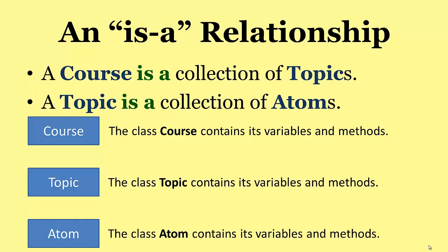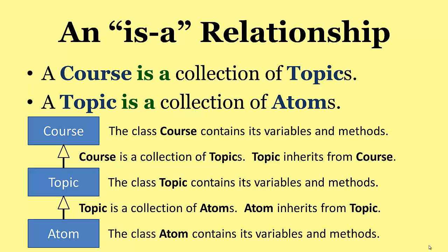Now comes the clever bit. What we're going to do is we're going to add a link between topic and course. This course is a collection of topics. So topic inherits from course. Think of it as looking at topic saying, where do I get my information from? Oh, I get it from this one, course. Likewise, we can link atom and topic. Topic is a collection of atoms. So atom inherits from topic. So atom can say, where do I get this extra information from? Well, I get it from topic. And topic gets information from course. It's in effect the grandchild of course.